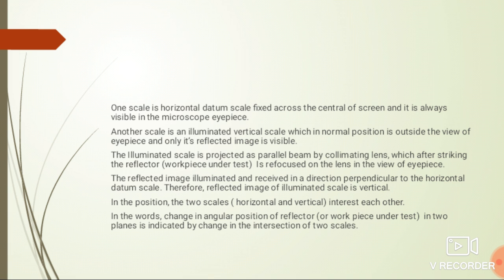Another scale is an illuminated vertical scale which in normal position is outside the view of eyepiece and only its reflected image is visible. The illuminated scale is projected as parallel beam by collimating lens which after striking the reflector is refocused on the lens in view of eyepiece.